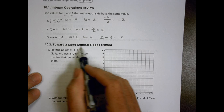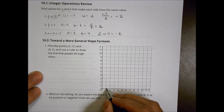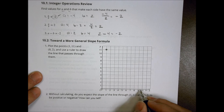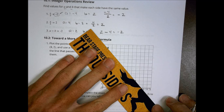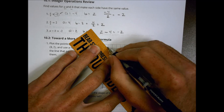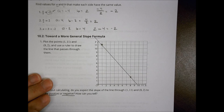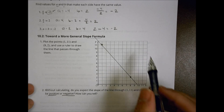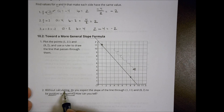10-2: toward a more general slope formula. Plot the points (1, 11) and (8, 2) and use a ruler to draw the line that passes through them. So we go to (1, 11) and (8, 2) and draw a straight line through them like so. Without calculating, do you expect the slope of the line through those points to be positive or negative? Seeing how this line seems to be going down, we would probably guess it's going to be a negative slope.